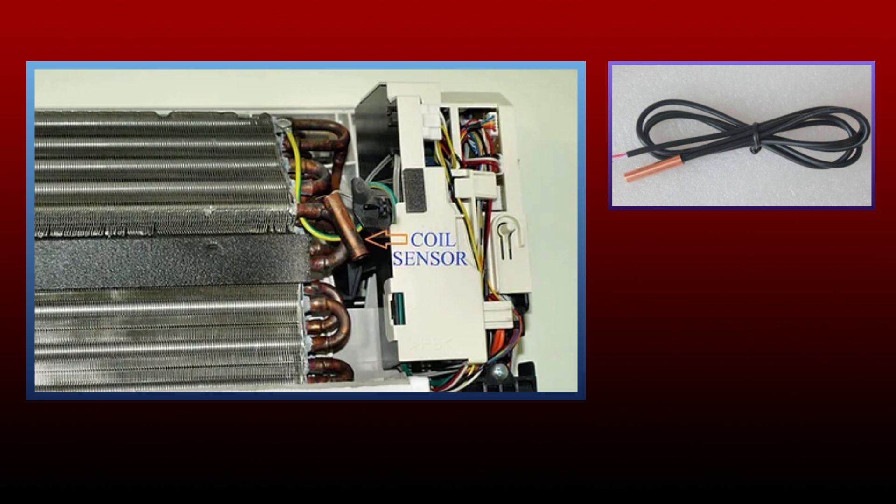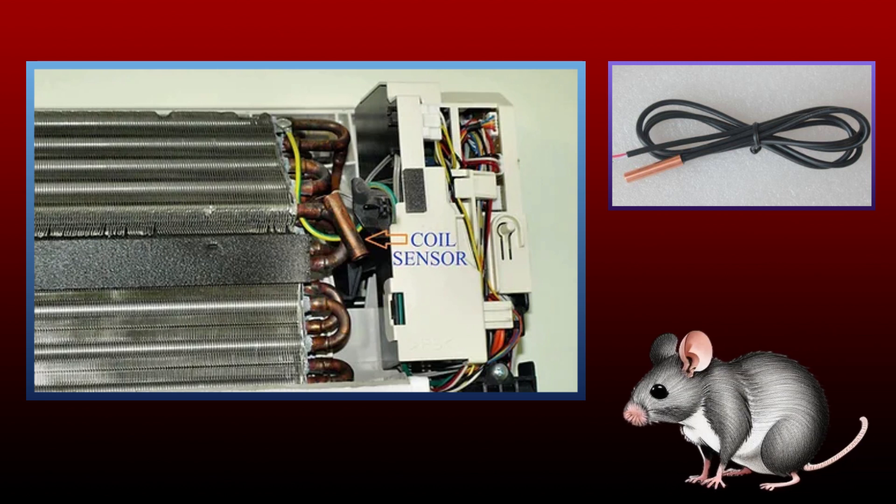This error can occur in your AC due to three reasons. First, it is possible that the wire of the coil sensor may have been cut by a rat. If the rat has cut the wire of the coil sensor, then reconnect the wire and this error will be completely fixed.